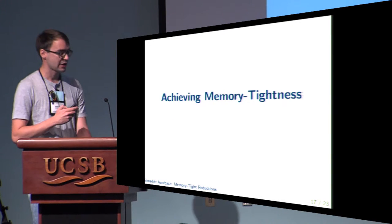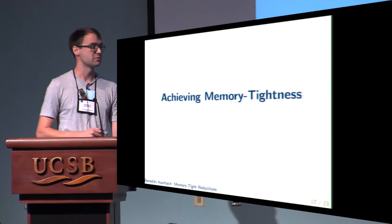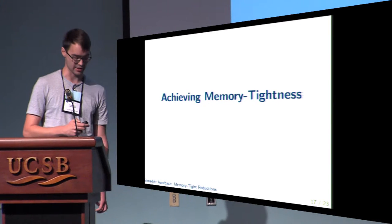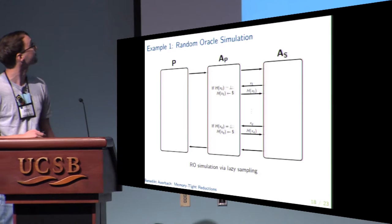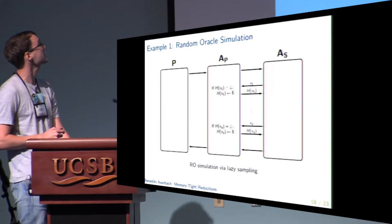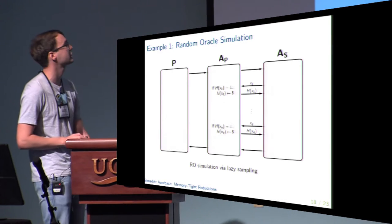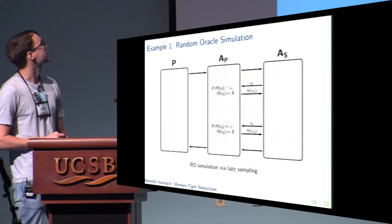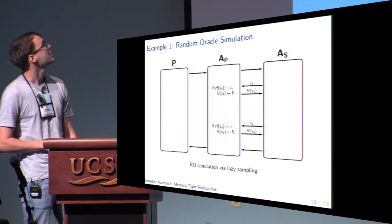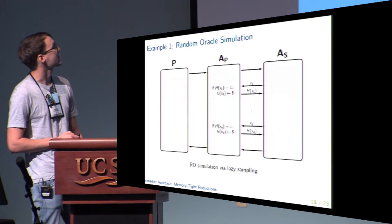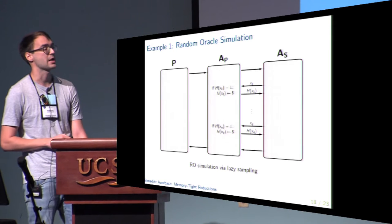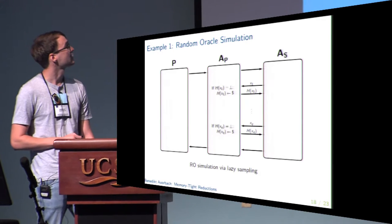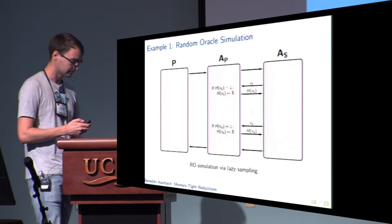So how can we achieve memory tightness? To give some examples, we revisit the earlier cases. The first was the simulation of a random oracle via lazy sampling, where we had to keep track of a list of queries and answers in order to provide the adversary with a consistent simulation of the random oracle.